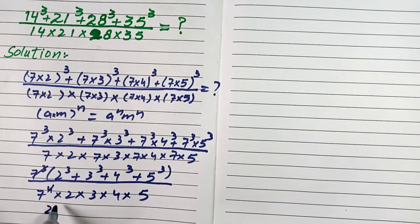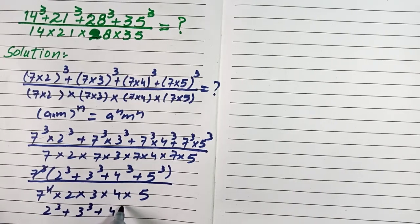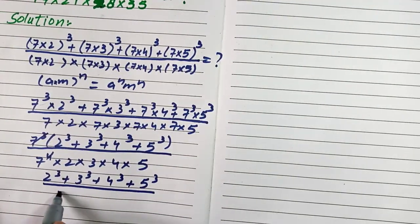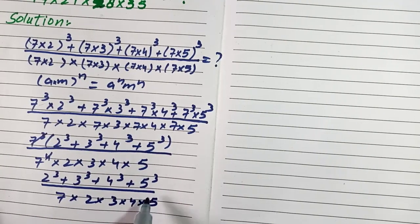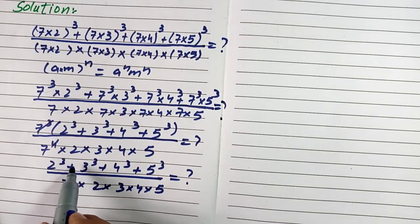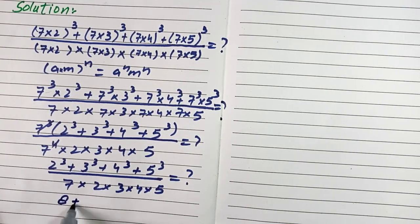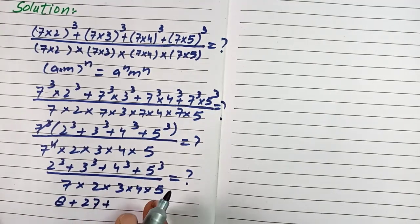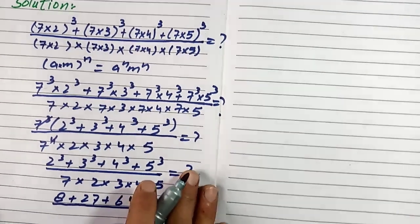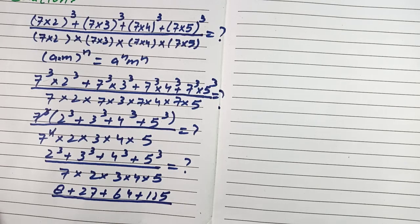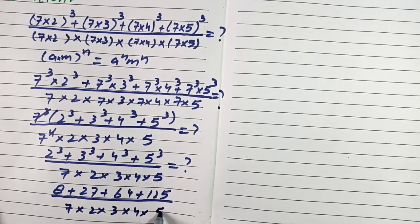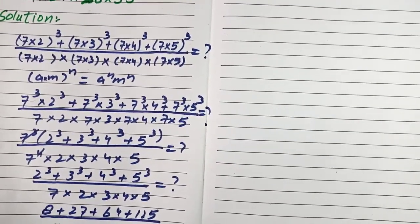So we have 2³ + 3³ + 4³ + 5³ divided by 7 × 2 × 3 × 4 × 5. Now we can compute: 2³ equals 8, plus 3³ equals 27, plus 4³ equals 64, plus 5³ equals 125. The denominator is 7 × 2 × 3 × 4 × 5.